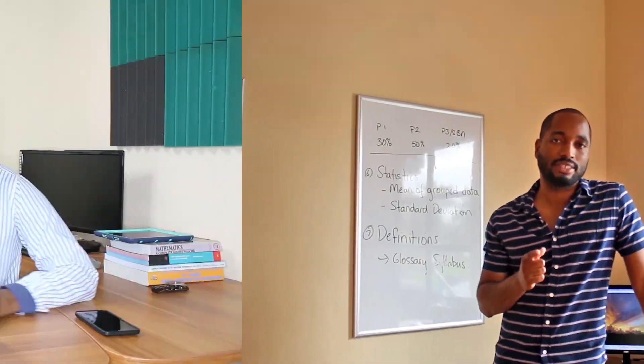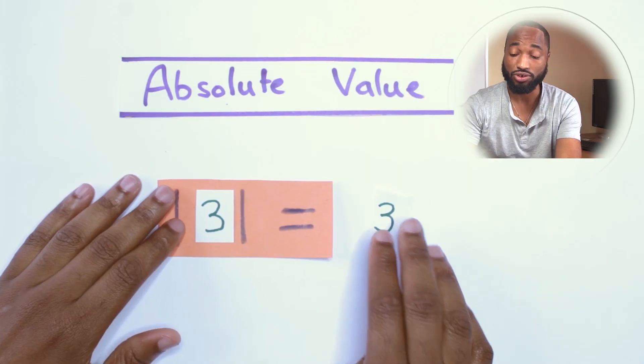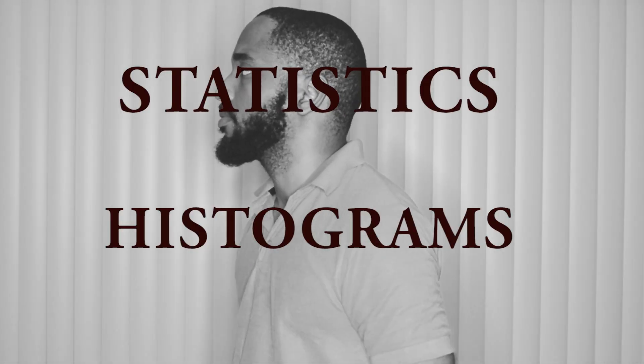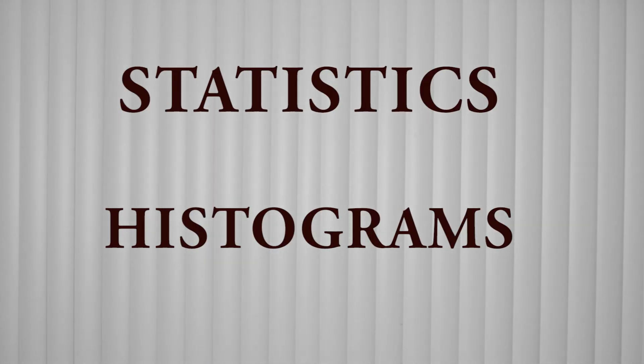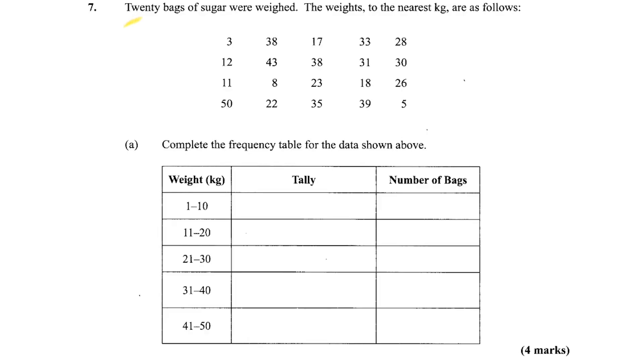So we are looking at stats from past paper questions and as I go through the question, I'll give you any further tips. It's early in the morning. The question: 20 bags of sugar — the weights to the nearest kilogram are as follows. These are the weights. Complete the frequency table for the data shown above.